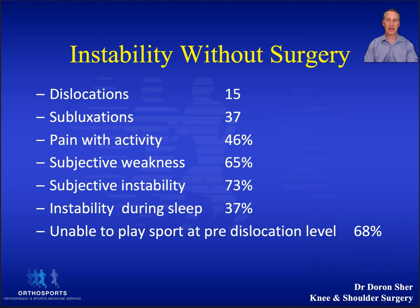What are the results if we choose not to operate on someone with a dislocated shoulder? In a study by Tsai and Johnson in 1991, patients had an average age of 23 and were about seven years post their initial dislocation, and you can see what the levels of patient dissatisfaction were.